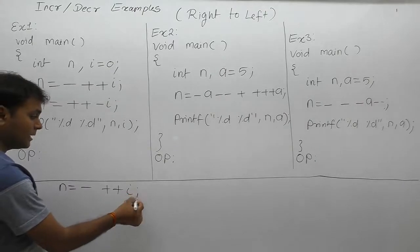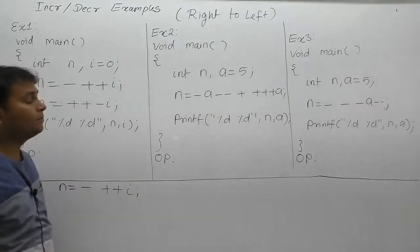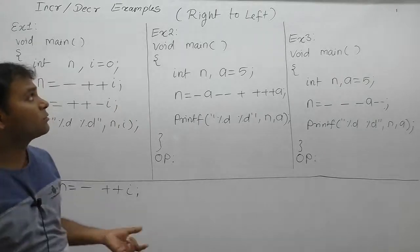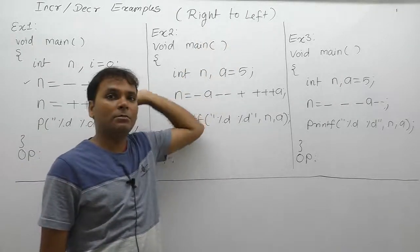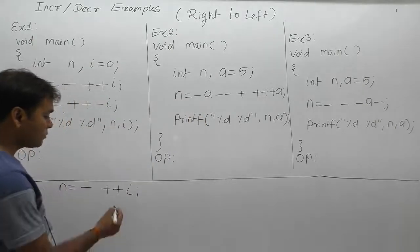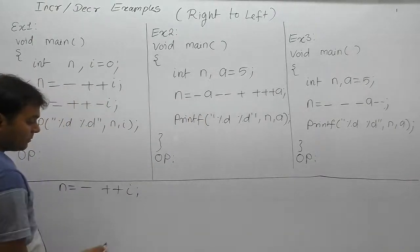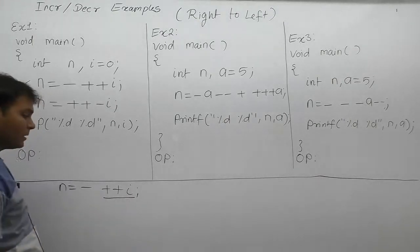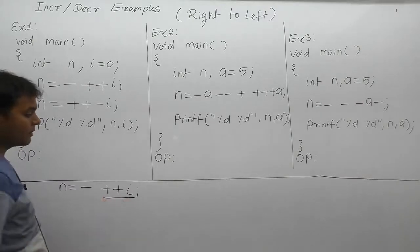Since minus and plus-plus have the same priority, the unary operators will be solved based on the associativity rule from right to left. According to right-to-left order, first apply the operator with respect to i — so apply the plus-plus operator first.